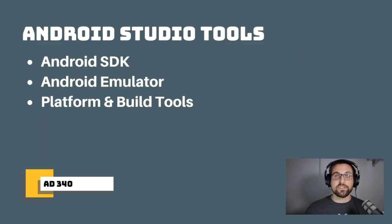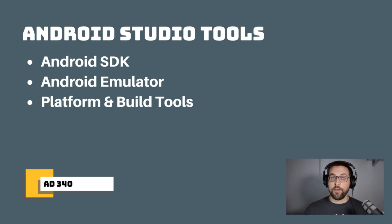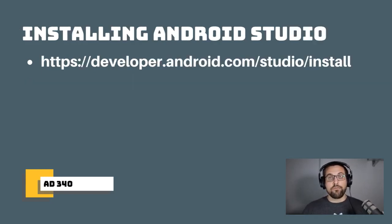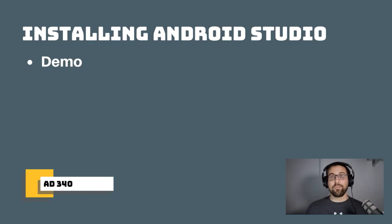The demo will walk through in great detail how to download, install, and set up Android Studio. I'll be doing it on a Mac, but I've also linked video resources for Windows. Beyond Android Studio itself, we'll need the Android SDK — all the libraries, code, APIs, and tools to actually build the app — the Android Emulator, which is a virtual device for testing without a physical device, and the platform and build tools. The install link is developer.android.com/studio/install.